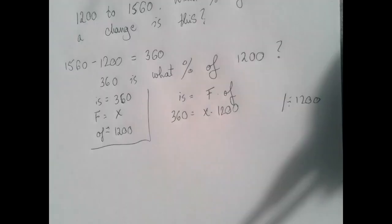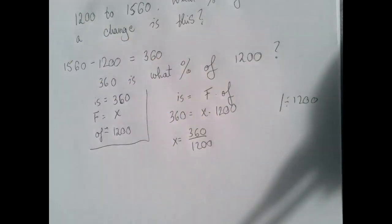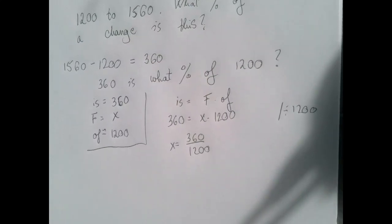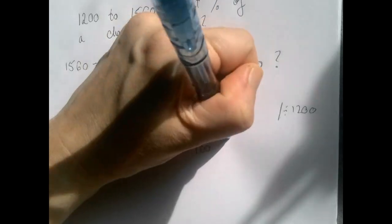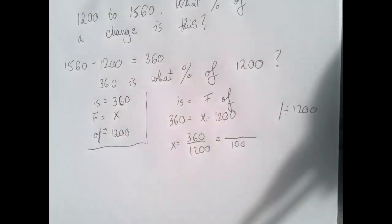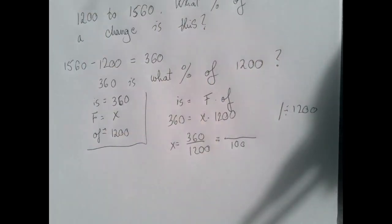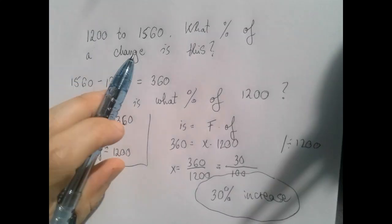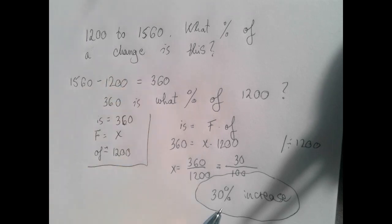And so then we get that x is 360 divided by 1200. And then remember, we don't want to scale this down to lowest terms as a reduced fraction. We wanted something over 100. And we got lucky because 1200 is a multiple of 100. It's 12 times 100. So we will get a denominator of 100 if you just divide upstairs and downstairs by 12. So 360 divided by 12 is 30. Going from 1200 to 1560 is a 30 percent increase.